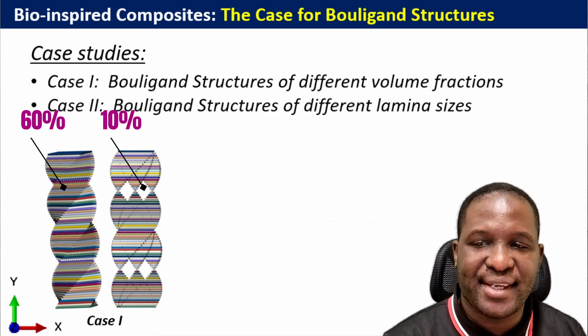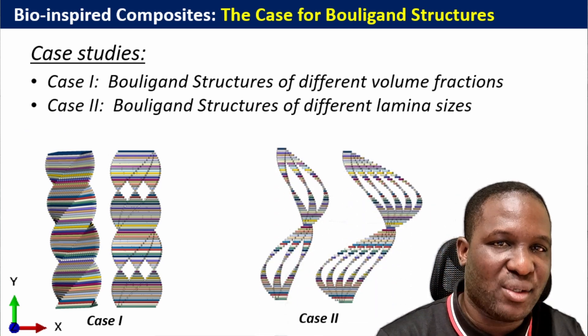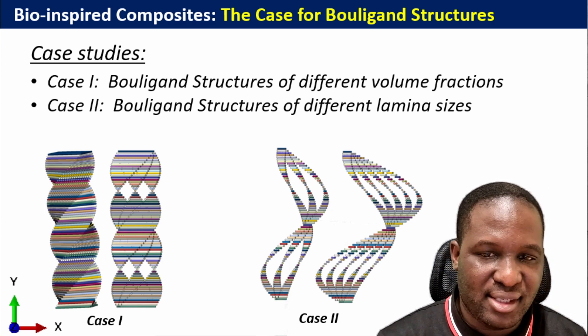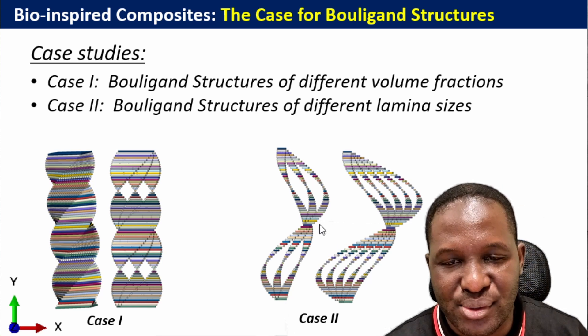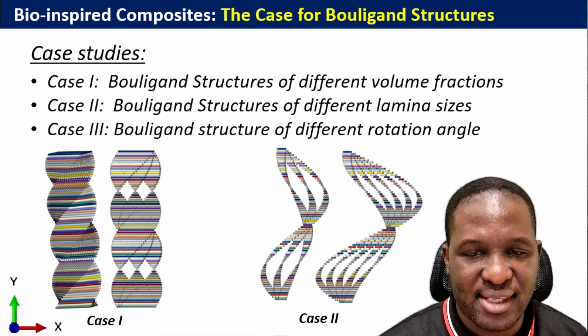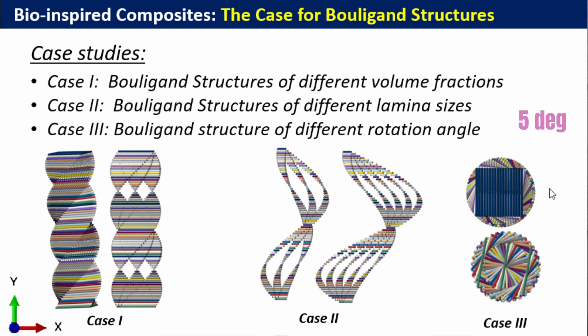The second case looks at different laminar sizes — changing the length and width to see what different Bouligand structures result. The two designs shown are examples of changes in length and width. The final case examines the rotation angle: at 5 degrees versus 10 degrees. As you rotate at different angles you end up with different Bouligand structures. We'll use a Python script to do this efficiently.